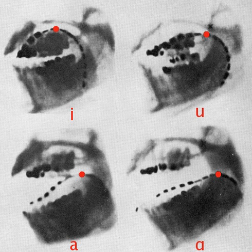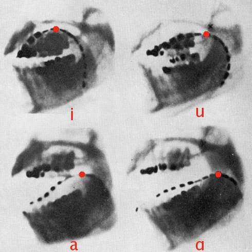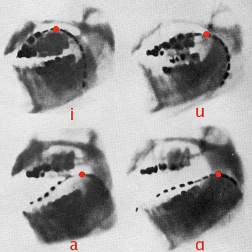IPA letters have cursive forms designed for use in manuscripts and when taking field notes. In the early stages of the alphabet, the typographic variants of G — open tail and loop tail G — represented different values, but are now regarded as equivalents.